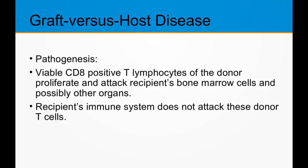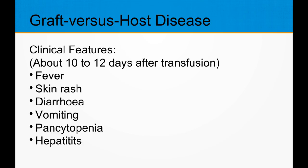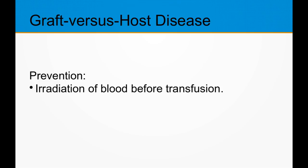As a result, donor T lymphocytes proliferate and attack the recipient's bone marrow, causing severe bone marrow suppression and pancytopenia — a condition where there are reduced levels of red blood cells, white blood cells, and platelets. Clinical features appear 10 to 12 days after transfusion and include fever, skin rash, vomiting, diarrhea, pancytopenia, and hepatitis. Prevention: irradiate the blood before transfusion, which destroys white blood cells so they cannot show this type of reaction.